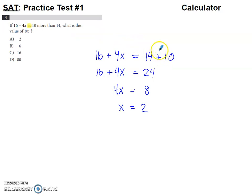Well, 10 more than 14 would mean I'm starting at 14 and going up by 10 from there. So that's obviously 24 on this side.